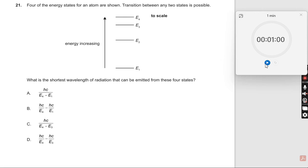Let us understand this question. Let me start this. Four energy states of the atom are shown. Transition between any two states is possible. Increasing energy over here - this is the ground state and this is the higher excited state.